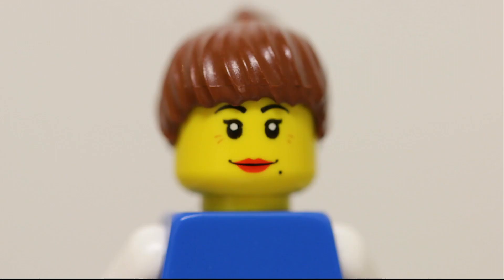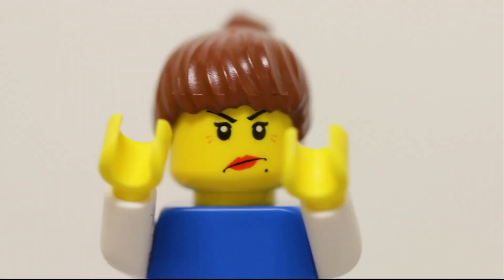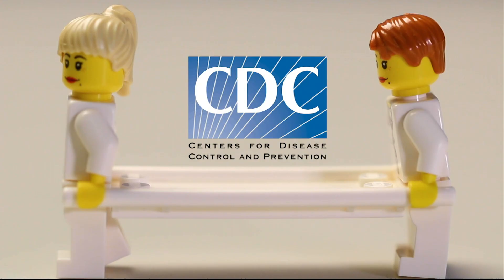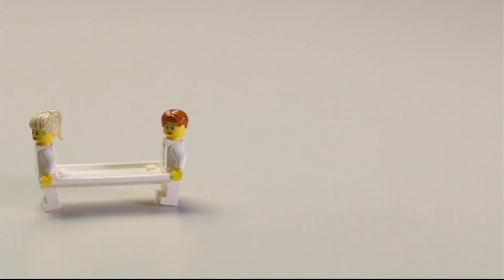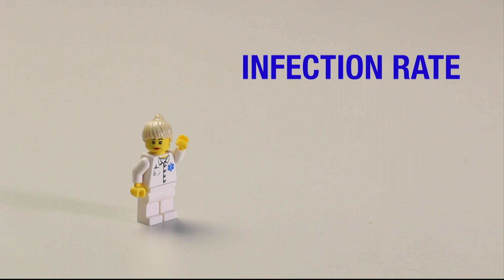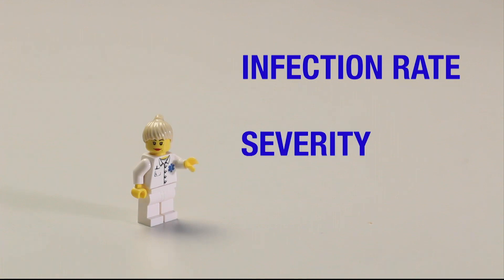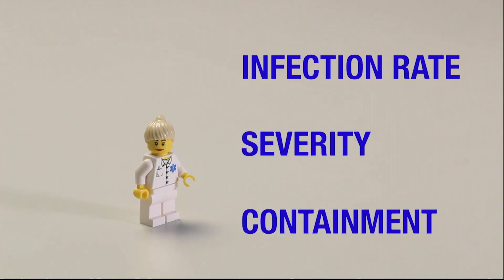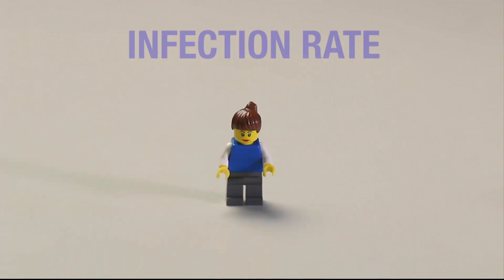When a virus starts to spread, people can panic. According to the CDC, the risk to the public depends on several factors: the infection rate of the virus, the severity of the illness caused, and how easy or hard it is to contain the virus.